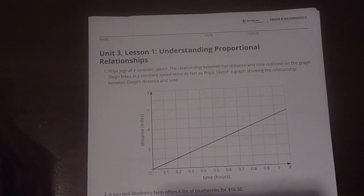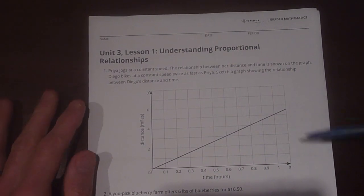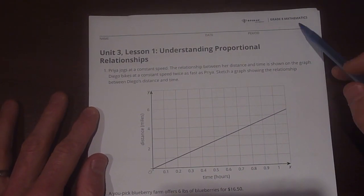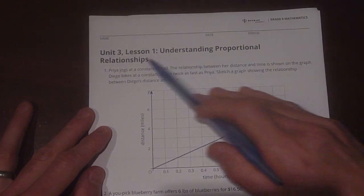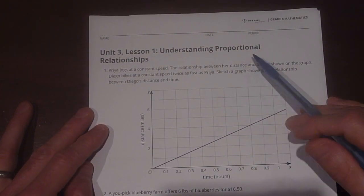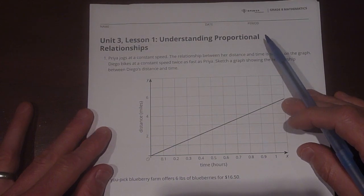Hey, everybody. We're going to jump back in to doing some math together. This is Grade 8 Mathematics for Open Up Resources, Unit 3, Lesson 1, Understanding Proportional Relationships. These are the practice problems for this particular lesson.